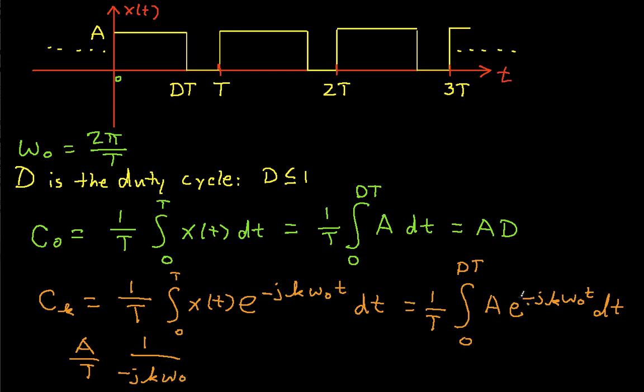That's basically this exponent up here. And then we'll have e to the minus j k omega 0 T evaluated between 0 and DT. So hopefully you're sticking with me. So far, so good.